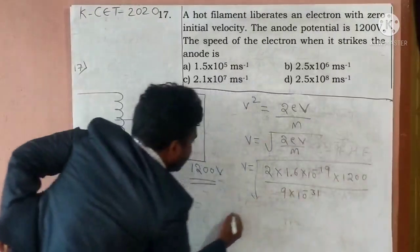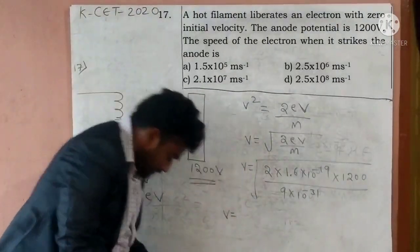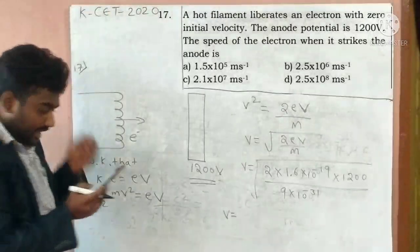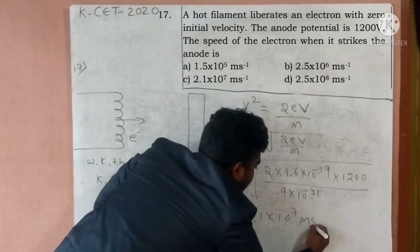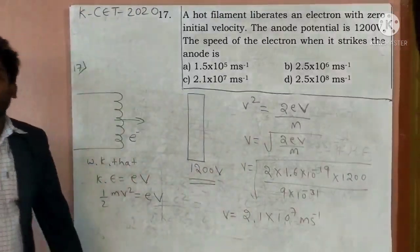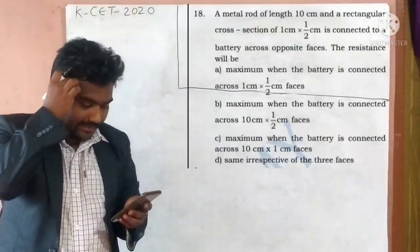So you can solve, the answer is - So option C. 2.1 into 10 raised to 7 meter per second is the answer. Understood?